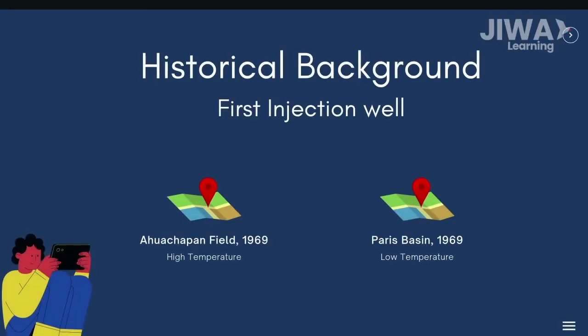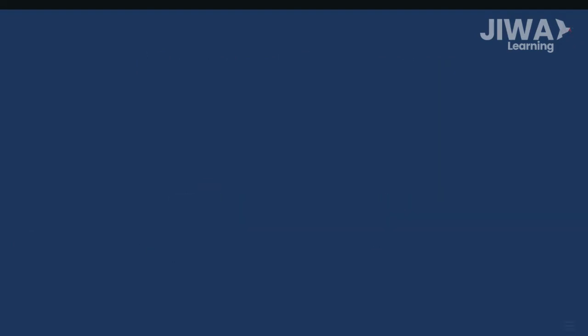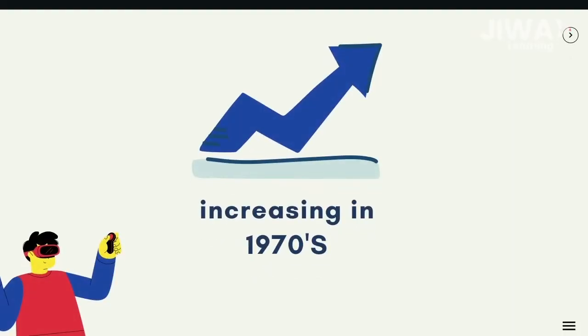The first known geothermal injection well in a high temperature system was done in the Ahuachapán field in El Salvador, starting in 1969 during the initial testing period of the field. On the other hand, low temperature injection also started in the Paris Basin in 1969, and during the 1970s the number of injection operations started picking up.